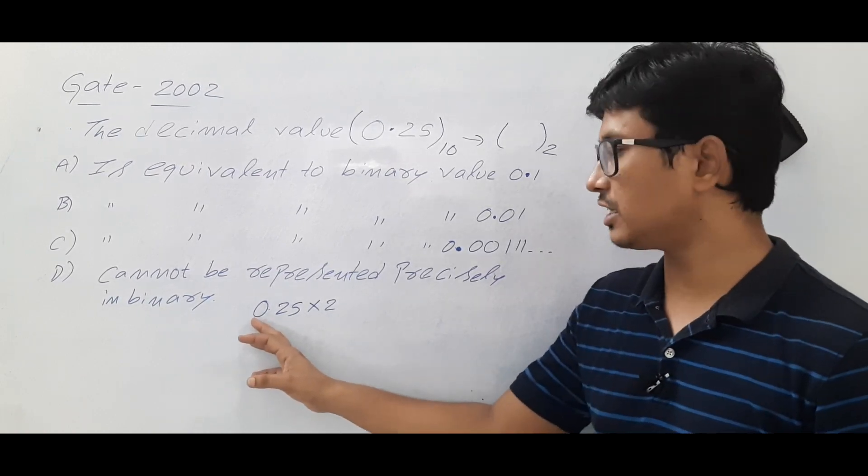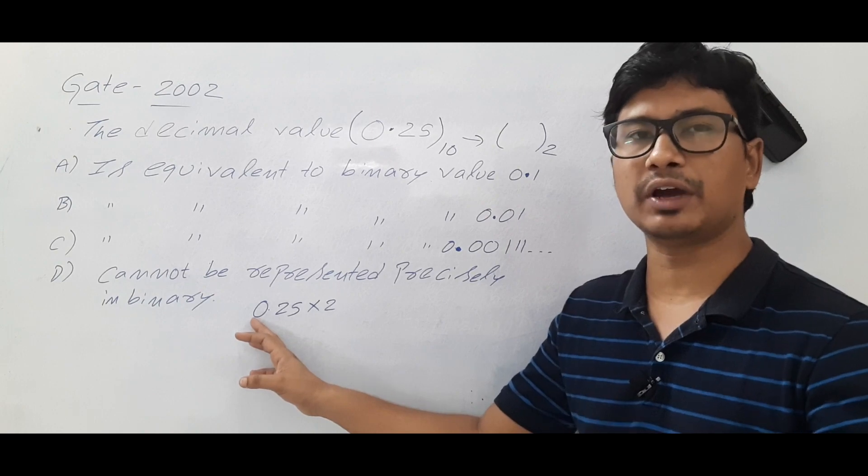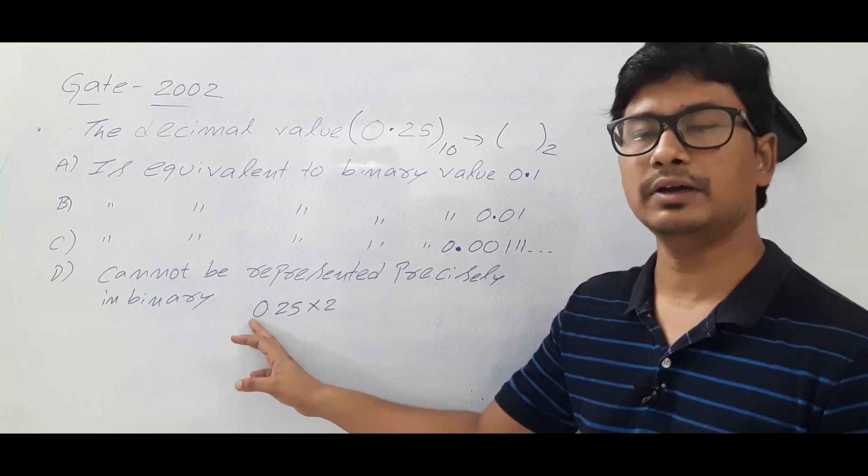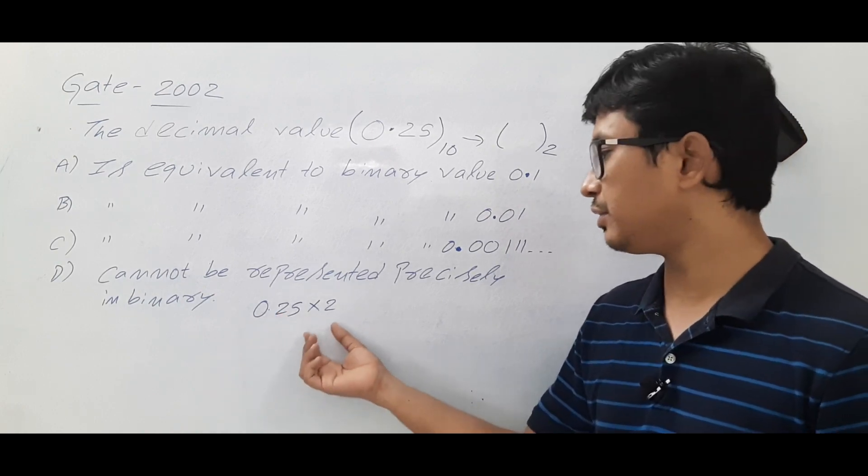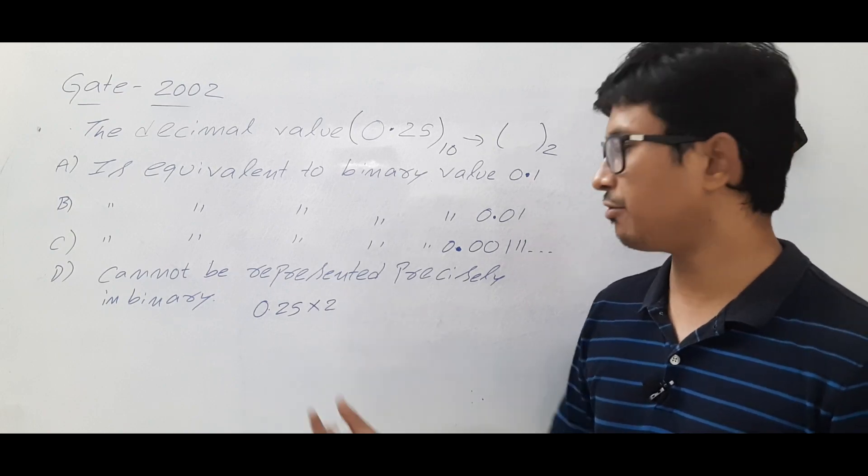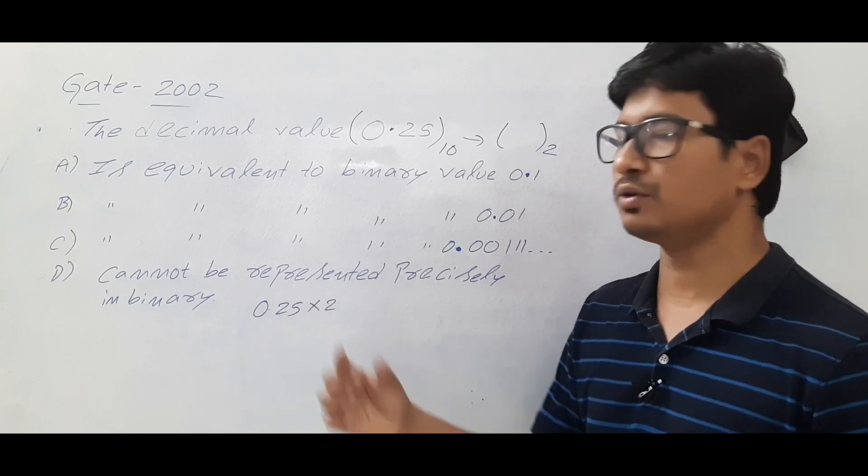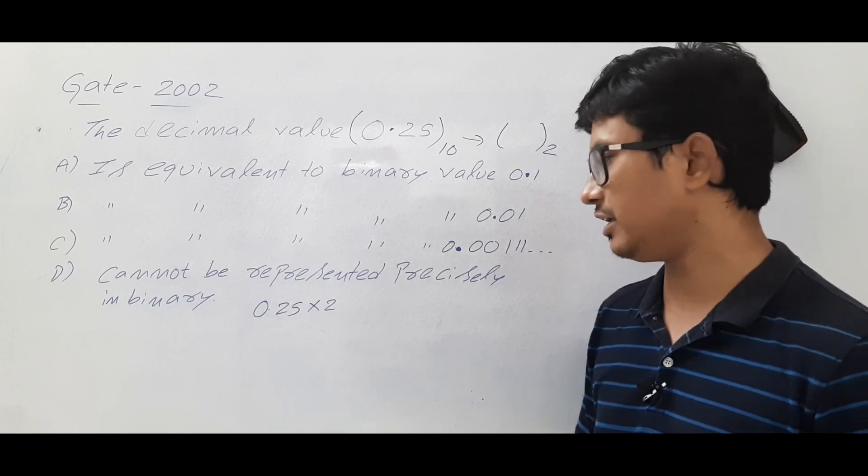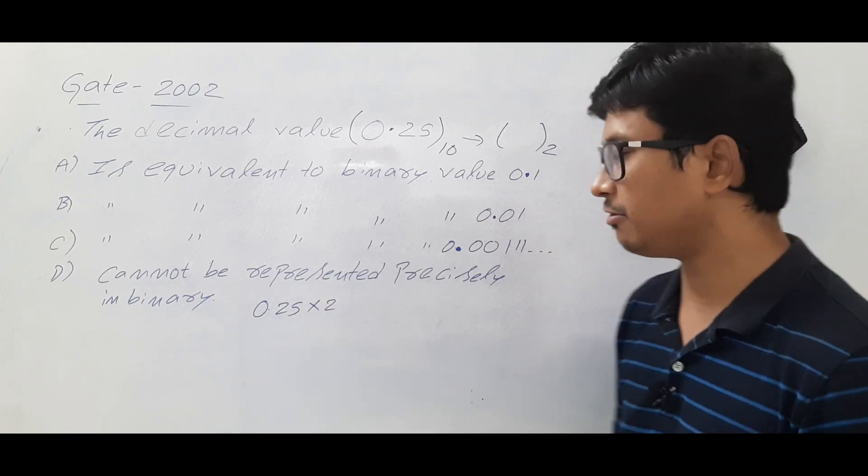Are you able to understand? If I get a 6 here, first I would have converted the 6 to a binary number, and then 0.25 I need to convert into binary number. If I have to convert into binary number, I have to multiply with 2.